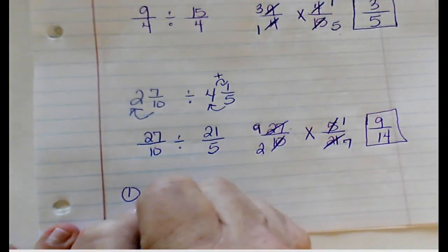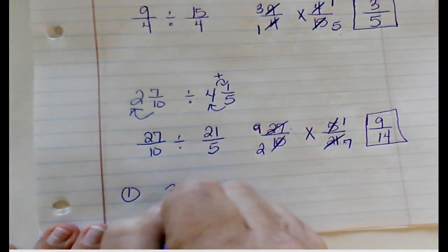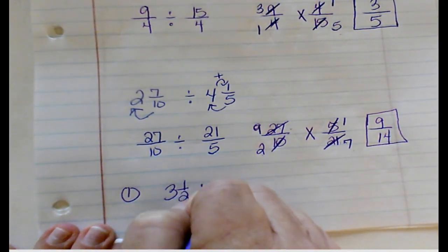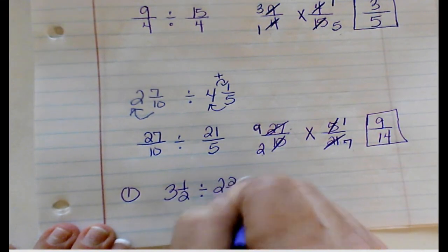So try this one: 3 and 1/2 divided by 2 and 2/6.